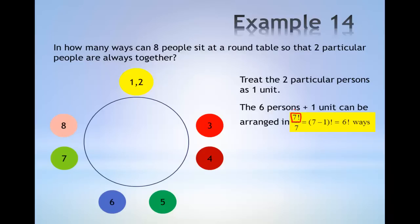However, each of these circular permutations are essentially the same. This leads to the division by seven, which is equal to seven minus one factorial, which is six factorial ways.